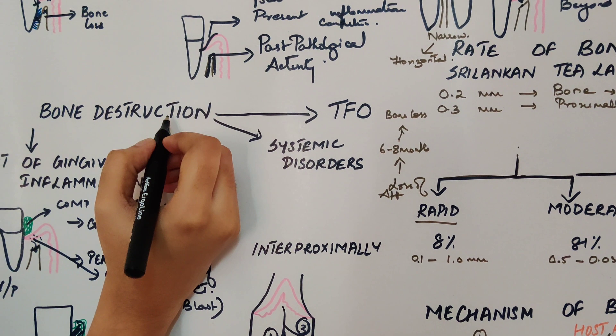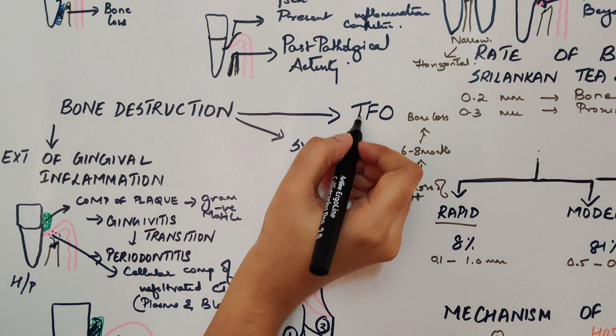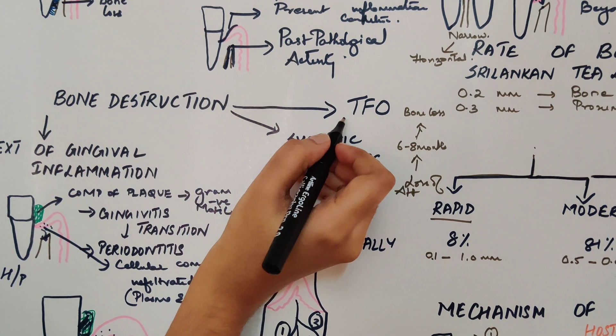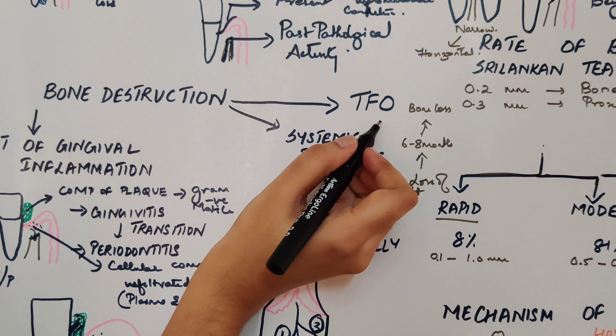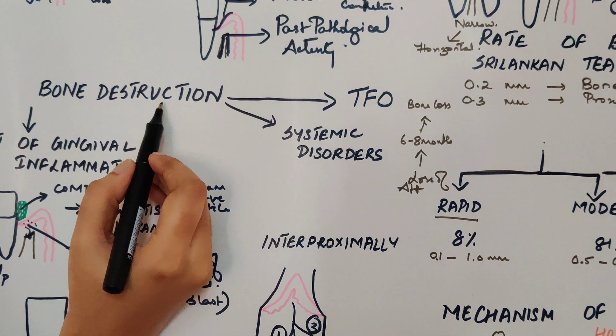Second cause of bone destruction would be trauma from occlusion. I have done an earlier video of how it causes bone destruction. I'll just add up the link at the end of the video.